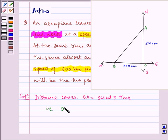That is OA is equal to 1000 multiplied by 3 by 2 which is given to us. So, this gets cancelled by 500. So, OA is equal to 1500 km.